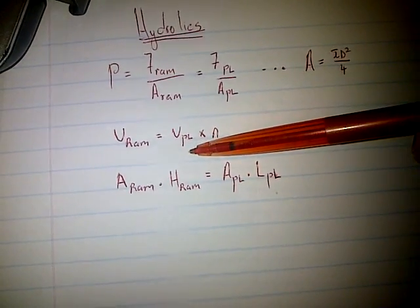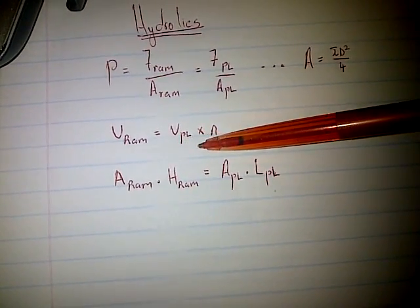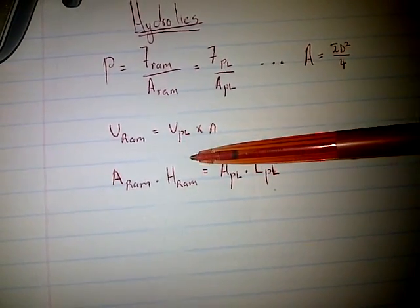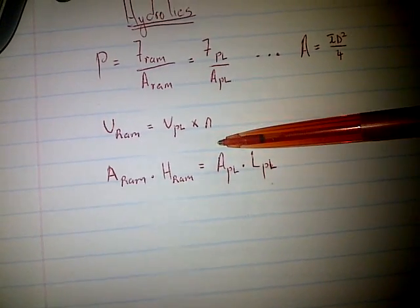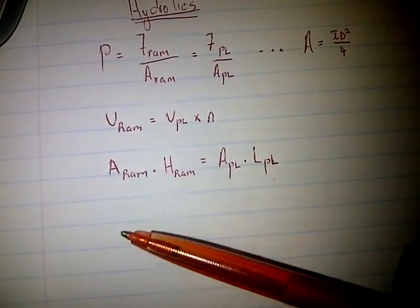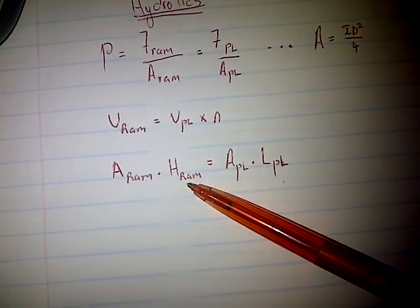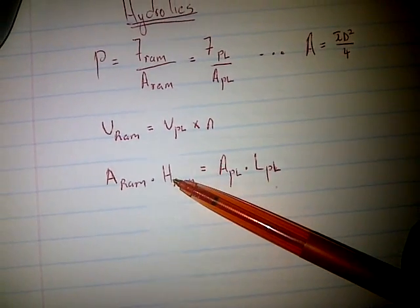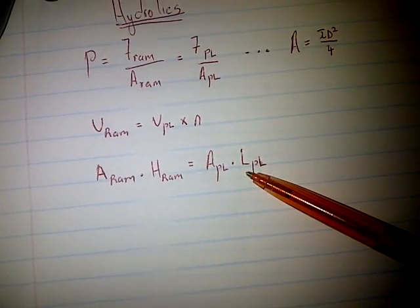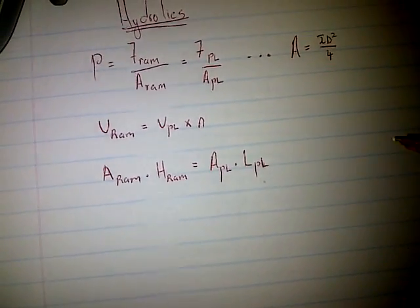We also have the volume relationship: volume on the ram side equals volume of the plunger multiplied by the number of pumping strokes. This gives us area of the ram multiplied by the distance moved by the ram (H) equals area of the plunger multiplied by the length moved by the plunger (L).